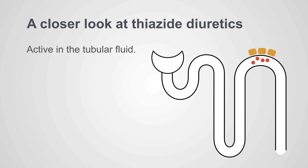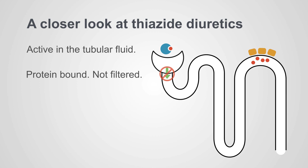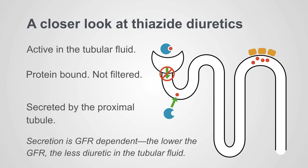Thiazide diuretics are active in the tubular fluid. In order to get there, they would need to be filtered. However, they are protein-bound and cannot be filtered at the glomerulus, so they enter the tubular fluid by secretion in the proximal tubule. Secretion is GFR-dependent, so the lower the GFR, the less diuretic that reaches the tubule.